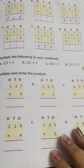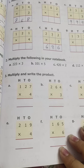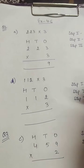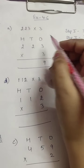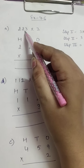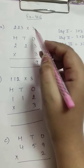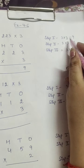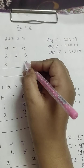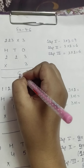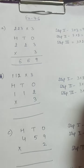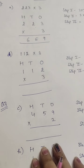This is question number 1 — the remaining parts you can do by yourself. Next is question number 2: multiply the following in your notebook. In part A, you have to multiply 223 and 3. Your first step: 3×3 = 9. Second step: 3×2 = 6. Third step: 3×2 = 6.